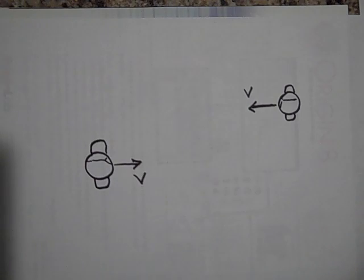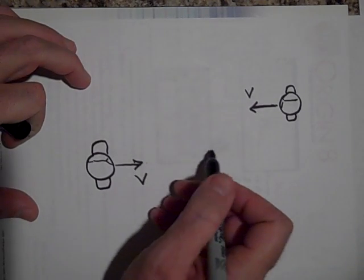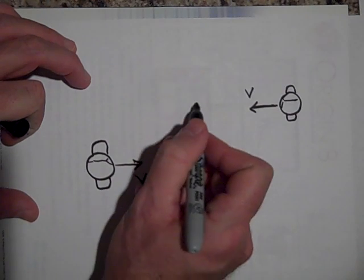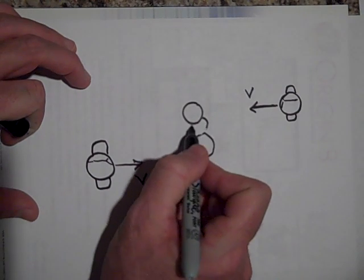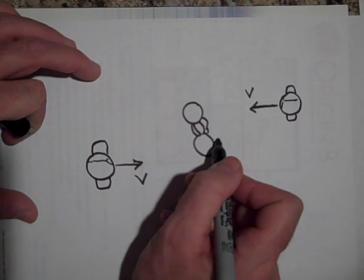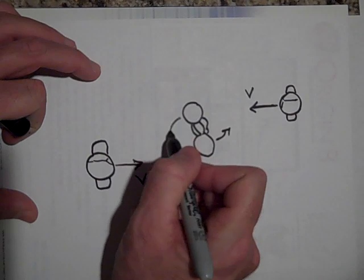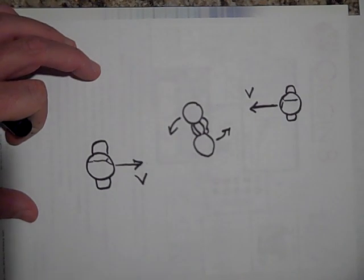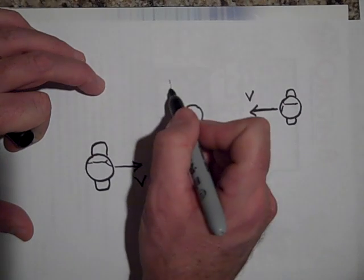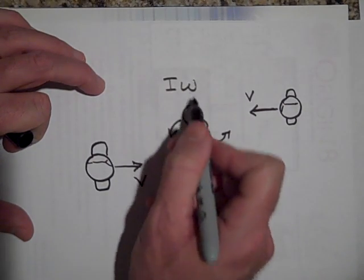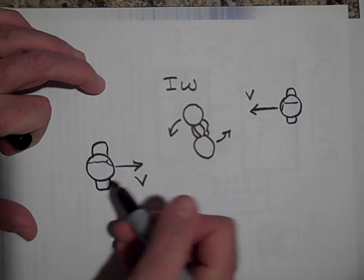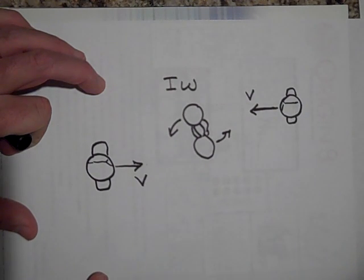And so as they skate by, they grab each other's hands. And what will happen when they grab each other's hands is they'll actually spin around. Can you imagine that? So when they go and grab each other's hands, I'll just draw their two heads and their arms. Because now they're holding arms, they're actually going to spin around like that. Well, you know that's angular momentum. They have some I times omega.